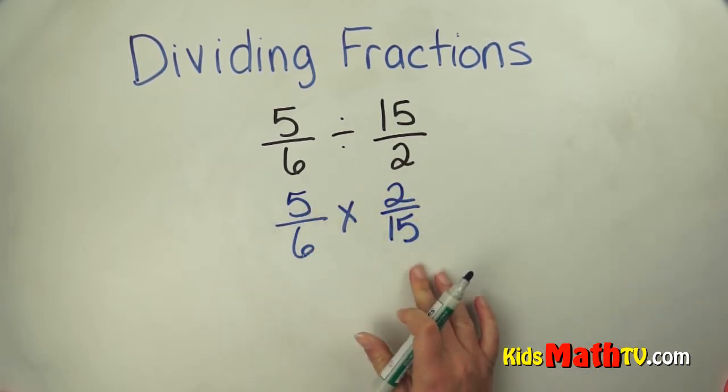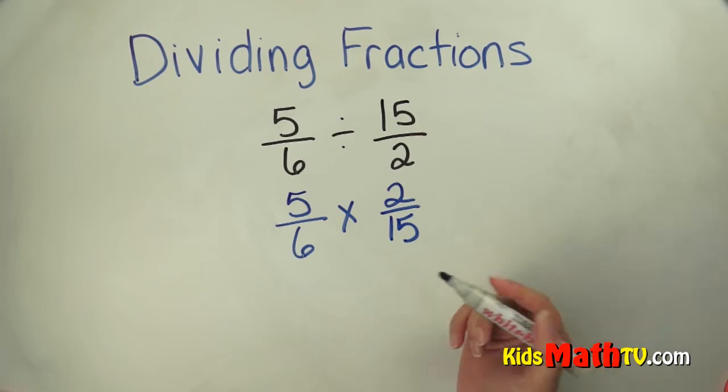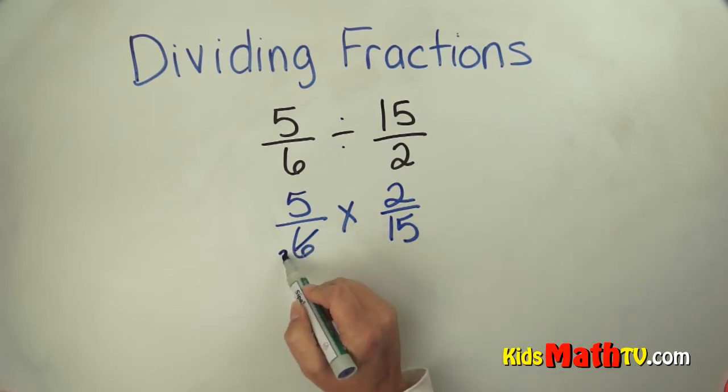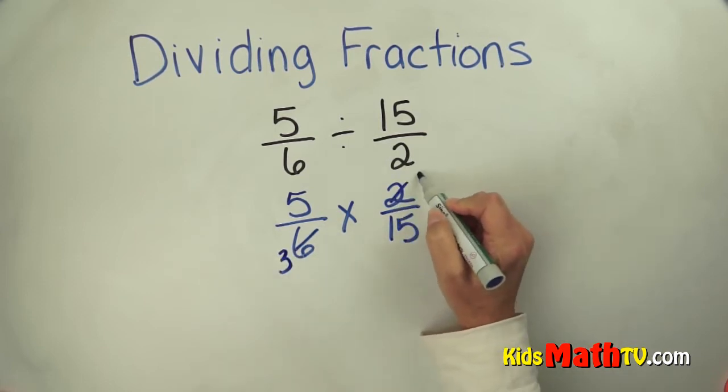So now I have a multiplication problem. Now I can see if I can cross-cancel. Is there a number that will divide 2 and 6 evenly? Yes, 2 will. So if I divide by 2, I get 3. Divide by 2, I get 1.